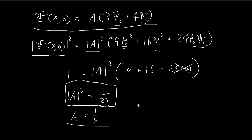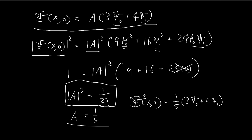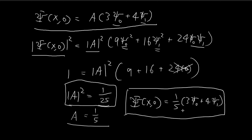In this case, that means our wave function at t=0 is equal to 1 fifth times 3 xi 0 plus 4 xi 1. So this is the answer to part A — the constant is equal to 1 fifth.